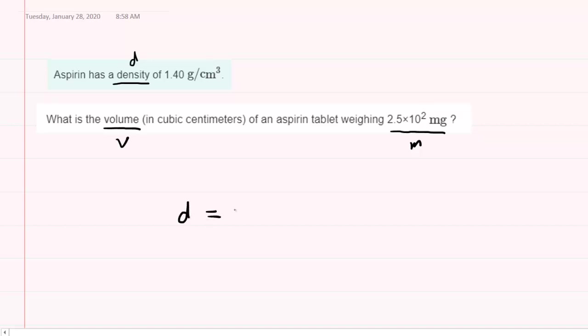We all know that density is equal to mass divided by volume. Since the question is asking us to solve for volume, why don't we go ahead and do so in this equation? So we'll multiply both sides of the equation by volume so that it cancels out on the right hand side.